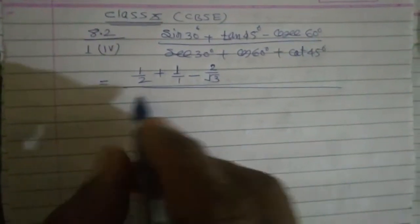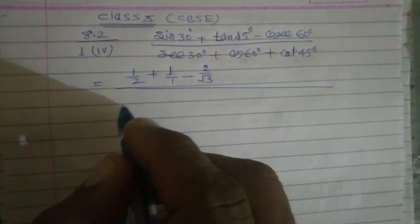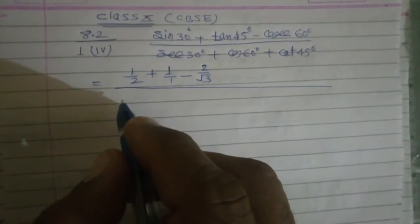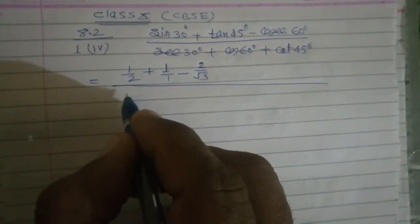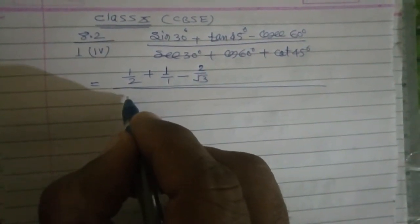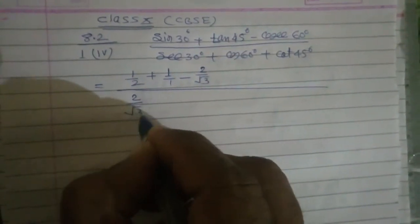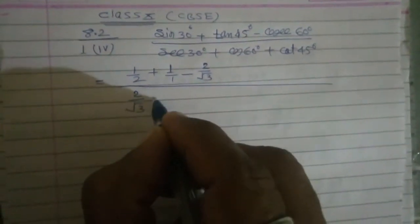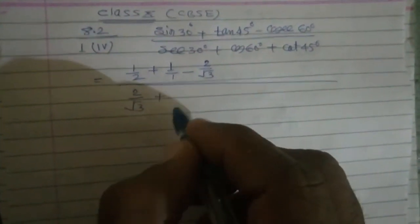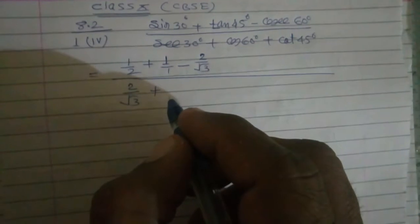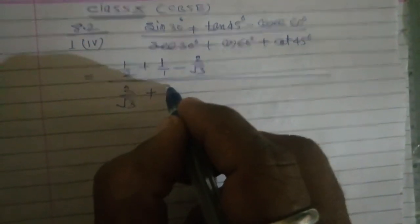Sec 30 का मतलब क्या होता है? Sec 30 किसका opposite value होता है? Cos 30 का है। Cos 30 की value होती है root 3 upon 2, so sec 30 you get 2 upon root 3. Plus cos 60 — cos 60 मतलब आपका हो गया 1 upon 2.